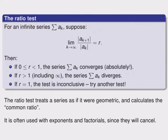If r is between 0 and 1, including 0 but not including 1, then the series converges. In fact it converges absolutely, which is something we'll learn about in a future section. If r is bigger than 1, and that includes infinity, then the series diverges. But if we get r exactly equal to 1, then the test is inconclusive, and we have to try another test.